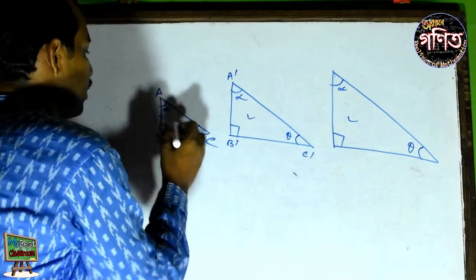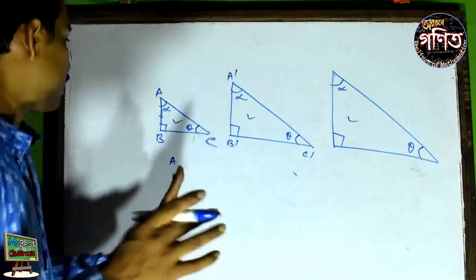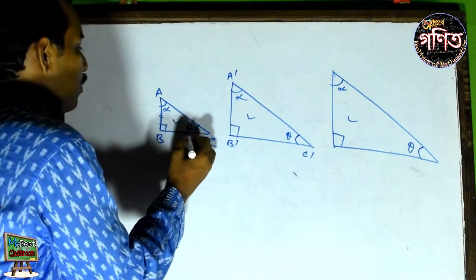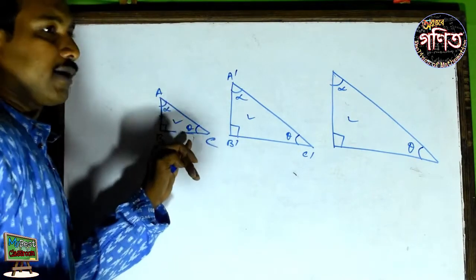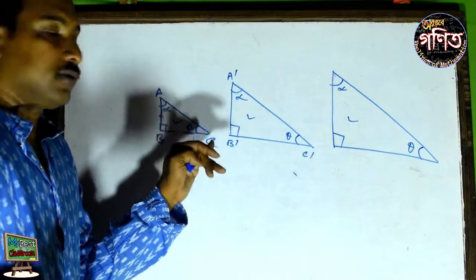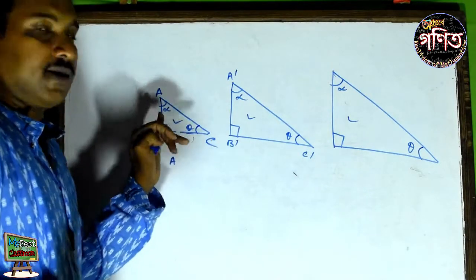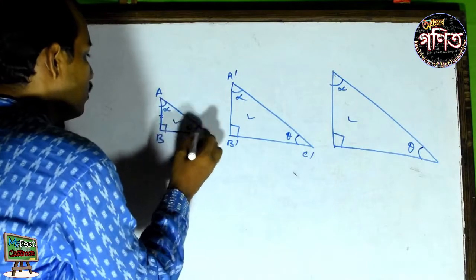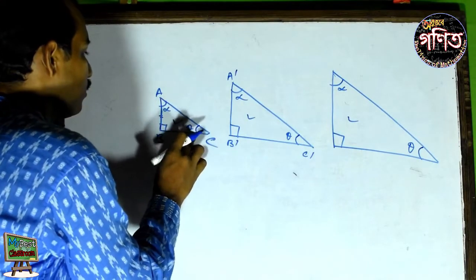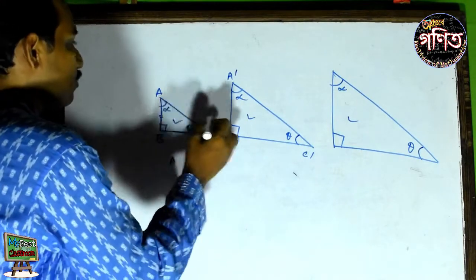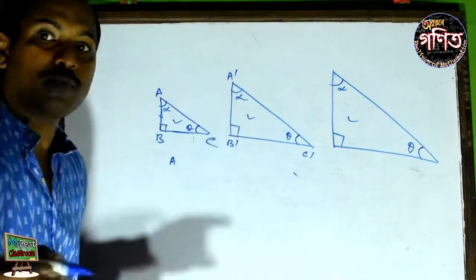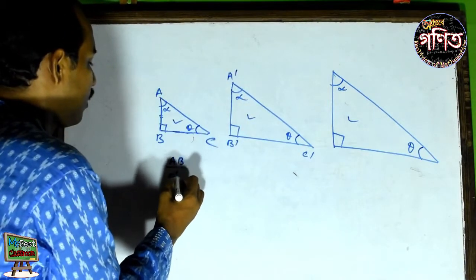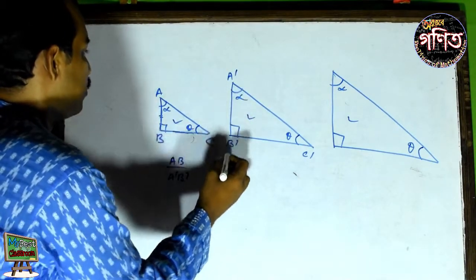Now the solution is that the solution is equal to eta and eta. It is equal to eta. If it is equal to eta, it is equal to eta. Now the solution is A·B by A-dash·B-dash.